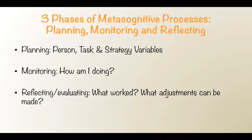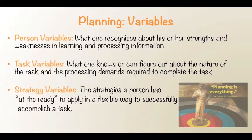Alright, let's look at the three phases of the metacognitive process: planning, monitoring, and reflecting and evaluating. The first step is planning. Planning in the metacognitive sense refers to looking at three variables: the person, the task, and the strategy. Person variables means to look at our own strengths and weaknesses and think about what might be easy or challenging given the task.